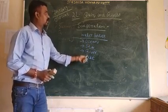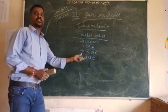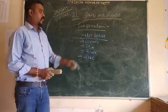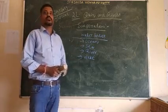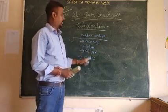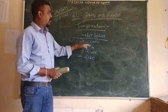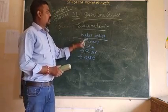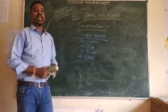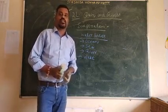These water bodies are constantly evaporating. Evaporation takes place due to increasing temperature. Whenever the temperature is increased on the earth's surface or land surface, the water bodies will be evaporated, and that evaporation will be mixed into the atmosphere. This is known as evaporation.